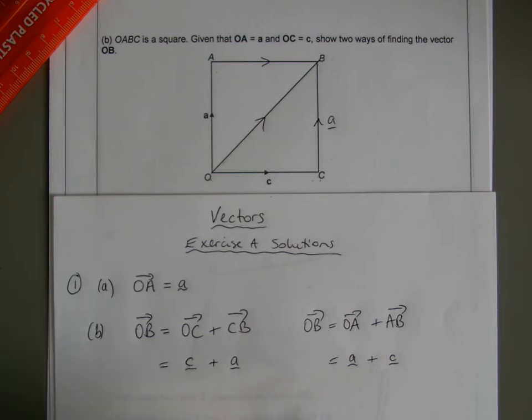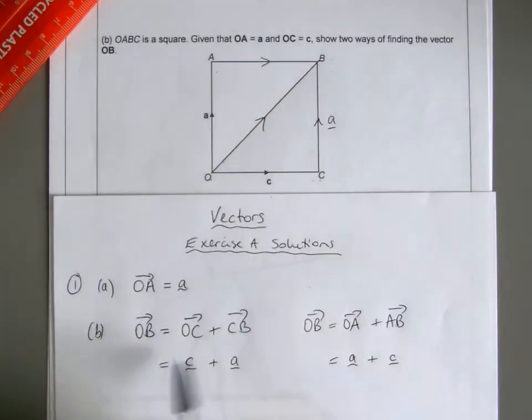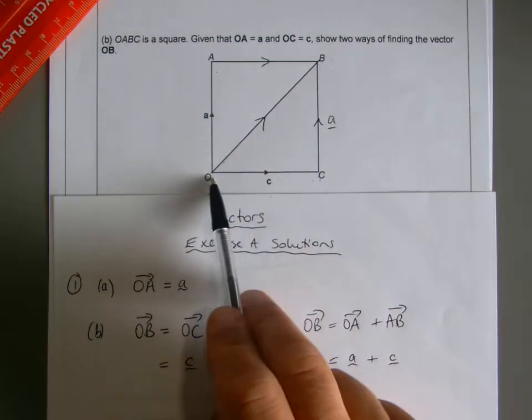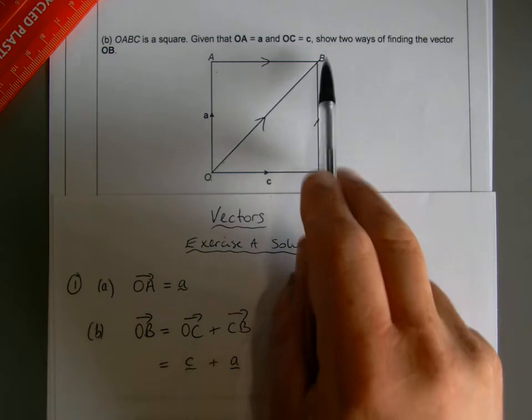And you can see they're both the same, just written the other way round, but the summation is the same. We can say that these are equal essentially. So the vector O to B is equal to the combination of these two. So O to B is the same as O to C plus C to B.